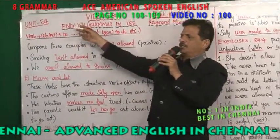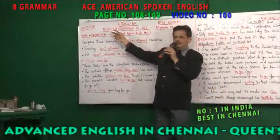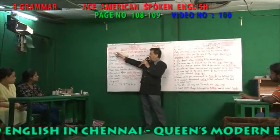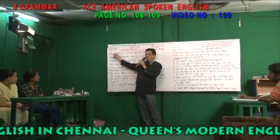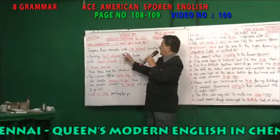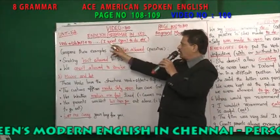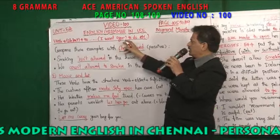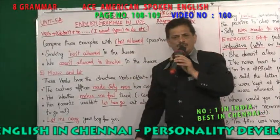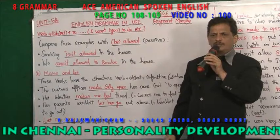For example: 'He said me to go' — 'said' is the verb, 'me' is the object, 'to go' is the infinitive. 'I want you to study' — 'want' is the verb, 'you' is the object, 'to study' is the infinitive. This is the structure you are going to see.